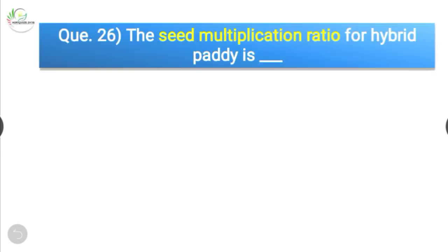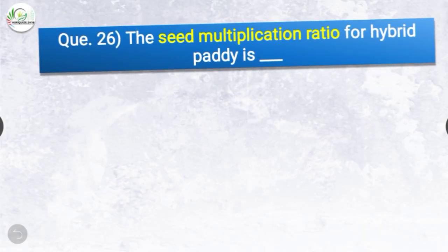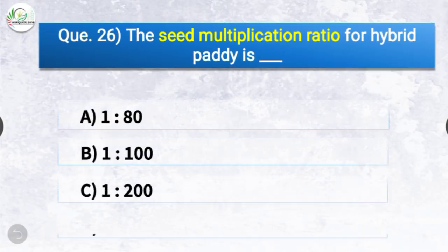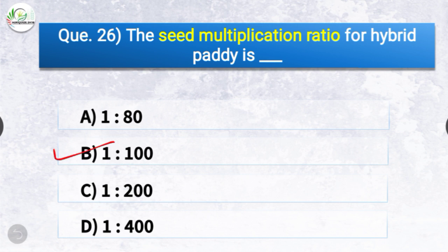Question number twenty-six: The seed multiplication ratio for hybrid paddy is — the options are 1:80, 1:100, 1:200, or 1:400. The correct answer is option B — 1:100. The seed multiplication ratio for hybrid paddy is 1:100, whereas for varieties it is 1:80.